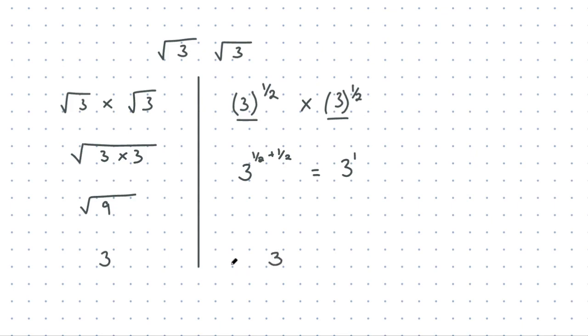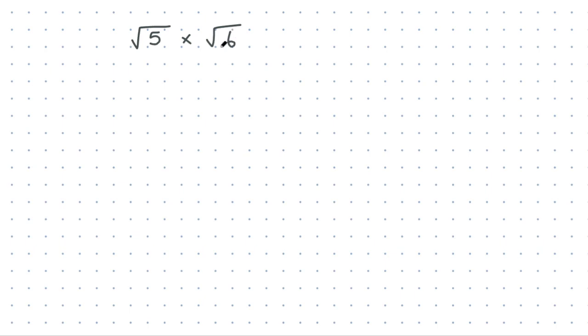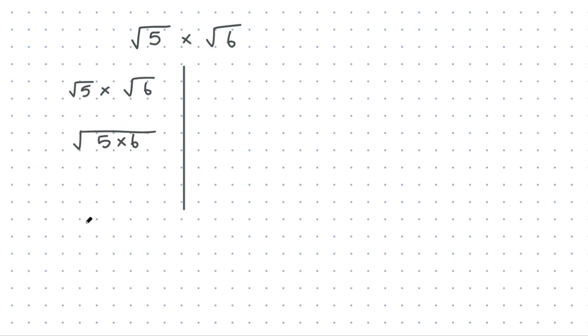So two different ways of thinking about the same problem. Now we have two different ways of thinking about the next problem when the numbers are different. If I take the square root of 5 and multiply it by the square root of 6, we can tackle it the same way — writing them both under the same root and multiplying inside, which gives root 5 by 6, which is the same as root 30.